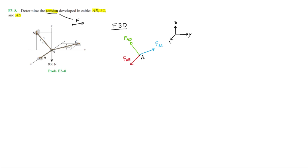Next notice that we have two slope triangles, one for cable AC and the other for cable AD. We can go ahead and add these slope triangles onto the free body diagram to define the senses of direction for these two forces. Lastly, we have the external 900 newton force which points downwards.